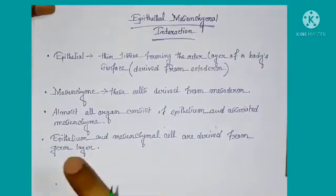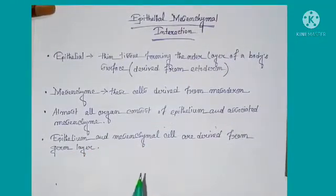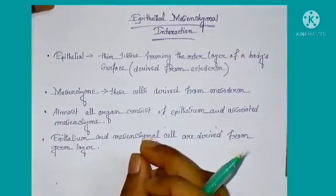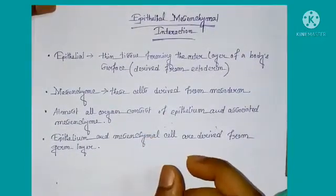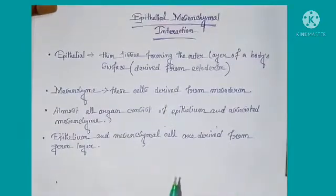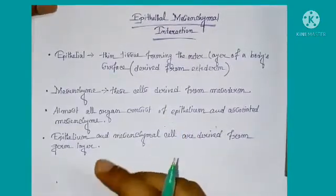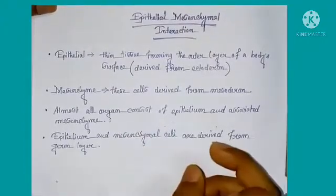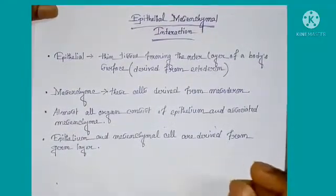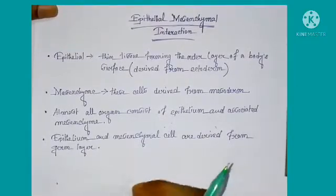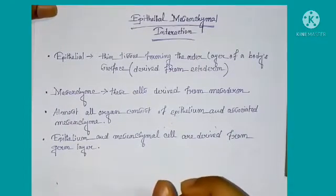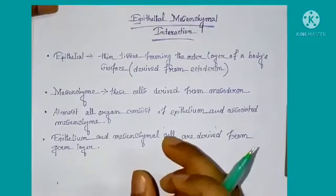In the case of instructive interaction, the responder cell is not specified to form a particular type of cell. If the responder cell were specified, it would form a specific type of cell and not form another type of cell in the presence of another inducer or in the absence of an inductive signal. Because the responder cell is not specified, it changes its fate according to the influence of different inductive cells or the absence of inductive signal.